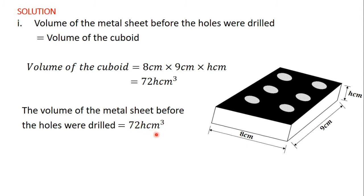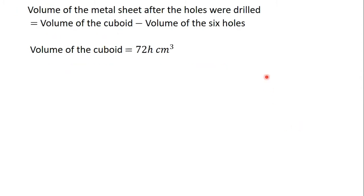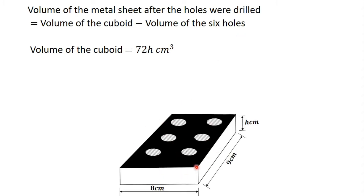The question also asks for the volume of the metal sheet after the holes were drilled. The volume of the metal sheet after the holes were drilled equals the volume of the cuboid minus the volume of the six holes. So we now need to find the volume of the six holes.